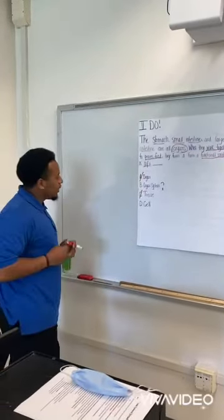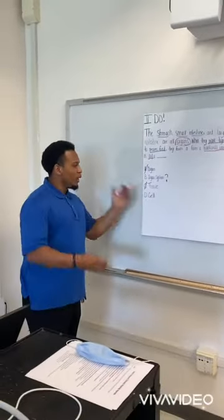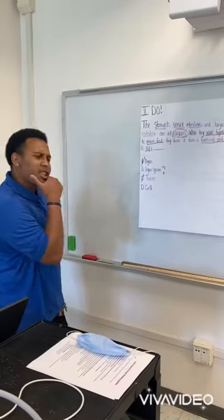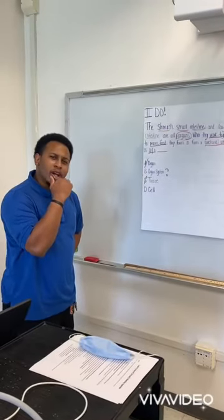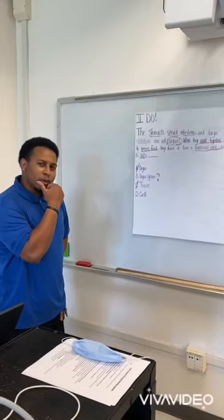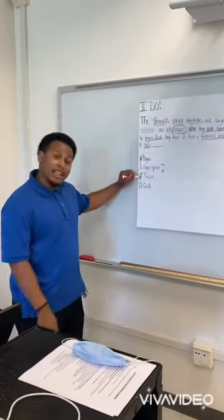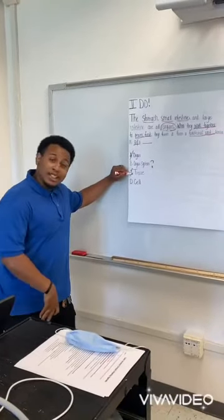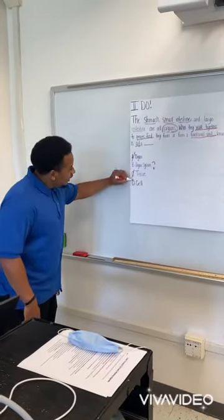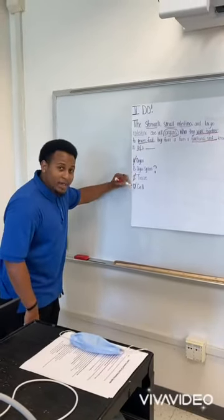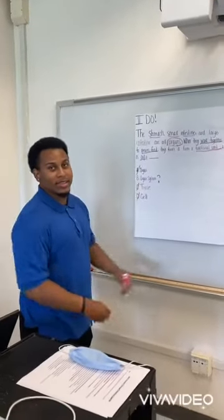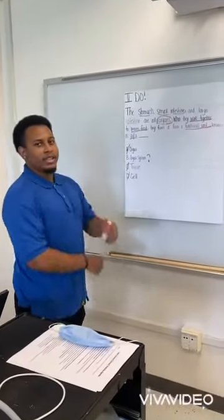And now we've come to the last answer, which is D — 'cell.' The cell was the first level of organization, and cells don't make organs. Cells make tissues, and tissues make organs. So D does not make sense. What other answer choice makes sense? Organ systems.